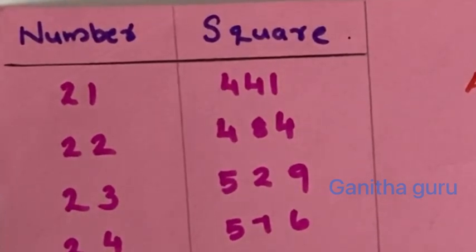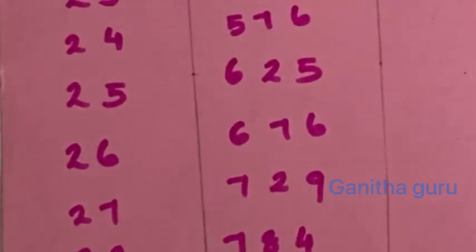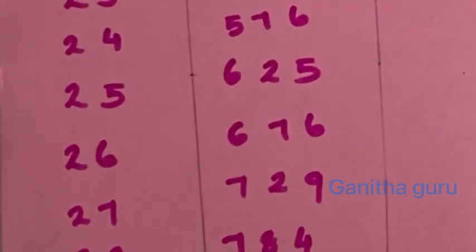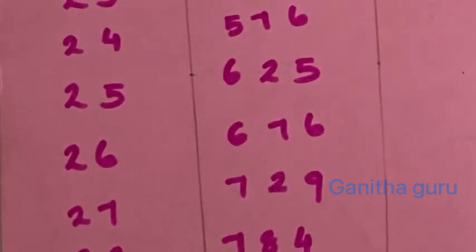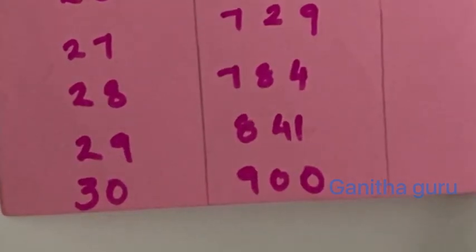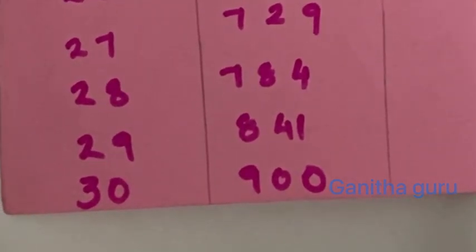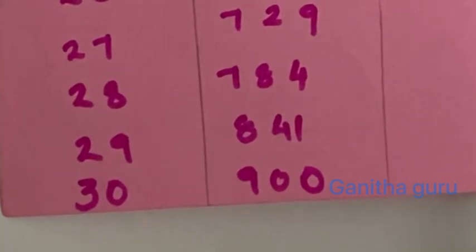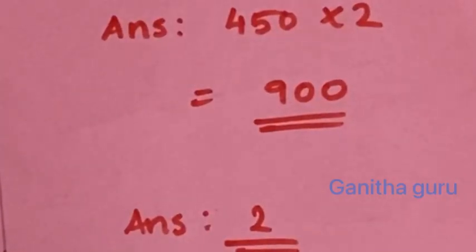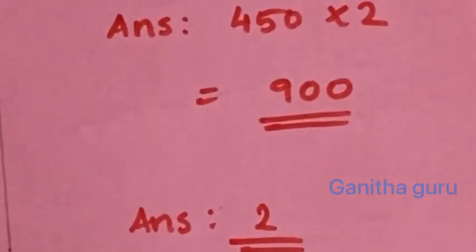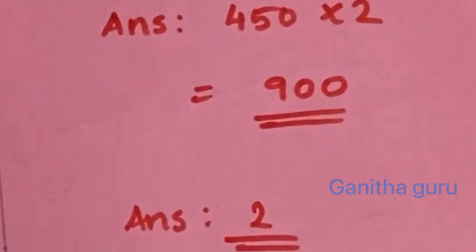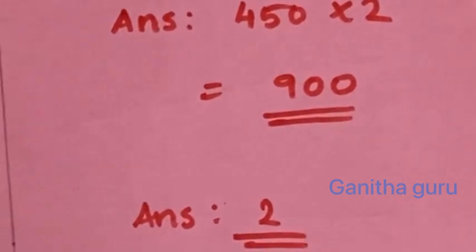729, 24 — 576, 25 — 625, 26 — 676, 27 — 129, 28 — 784, 29 — 841, and 30 — 900. The answer: 450 multiplied by 2 is 900, and 900 is a perfect square. So the answer is 2.